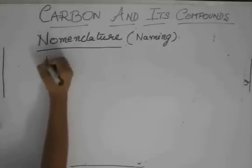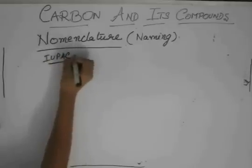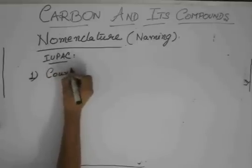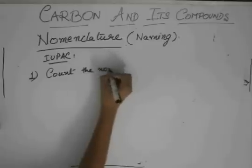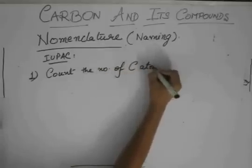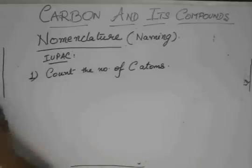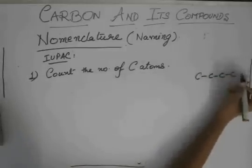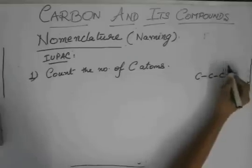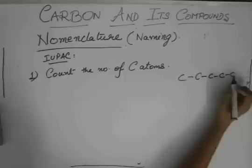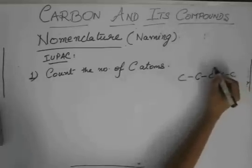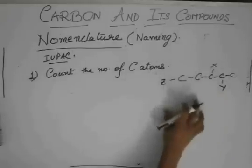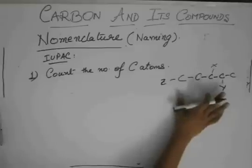So, in IUPAC, the first rule to name a compound is count the number of carbon atoms. Now, when, suppose you have a compound like this, let's not go into branching right now, like this, and you have functional groups also here and there, suppose x is a functional group, y is another functional group, z is another functional group, like that. So, you count the number of carbon atoms in the compound.